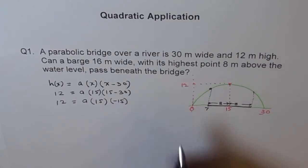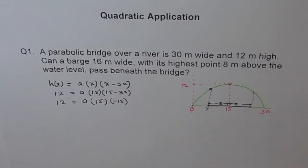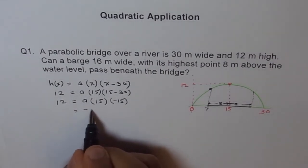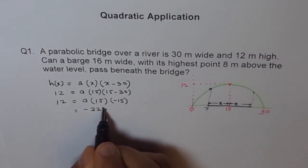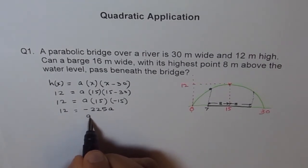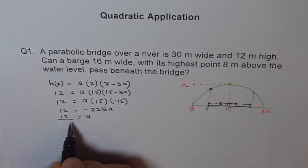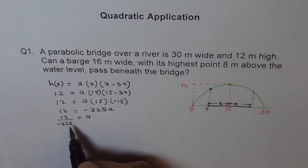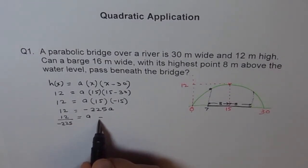Now we can solve for it. So we get 12 equals to A times 15 times minus 15. And 15 times 15 is 225. So we get minus 225A equals to 12. So A becomes 12 over minus 225. That's the value of A. You can simplify this.